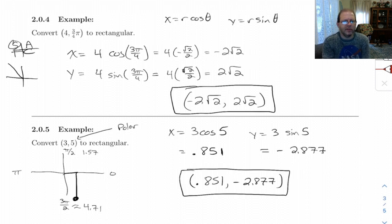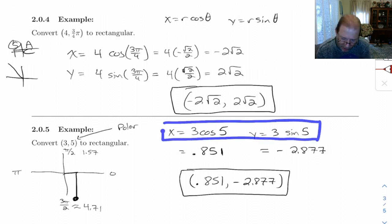So that's really all there is to converting polar to rectangular. Polar to rectangular is the easier of the two, because it's just plugging into those formulas.